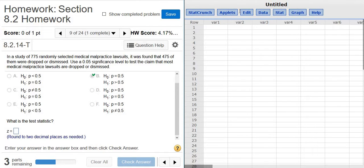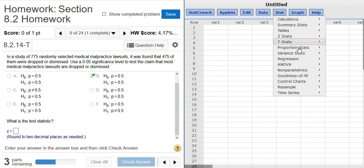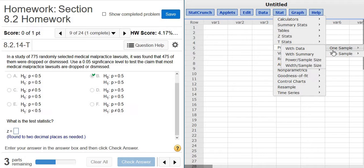And then what is the test statistic? To do this, we go to StatCrunch. We go to Stat, Proportions, One Sample, With Summary. Again, it's Stat, Proportions, One Sample, With Summary.